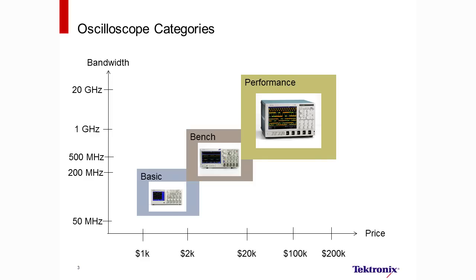Throughout the session, you'll hear me use terms like basic, mid-range, or bench scopes and high performance. On this slide, I try to give you a rough idea of what I mean by these terms. Note that the scales on this chart are sort of pseudo-logarithmic in order to fit in all of the bandwidths and prices. Also the performance realm goes higher than 20 GHz and it also goes higher than $200,000.